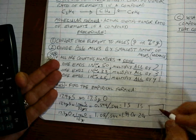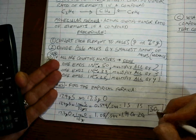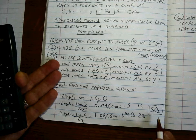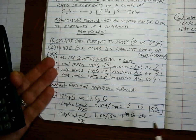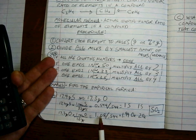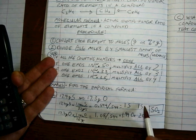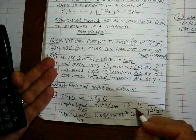And how do we write that formula? SO2. And we're done. That's it. That's all we have to do. Convert to moles, divide by the smallest, and then look at the ratio.